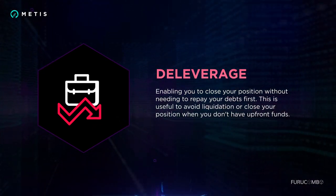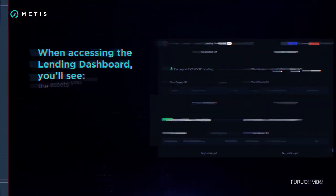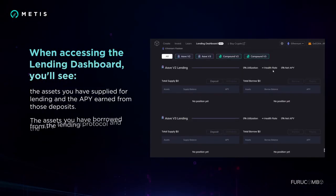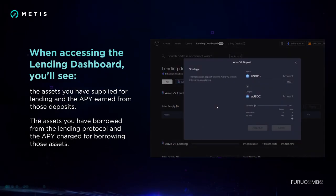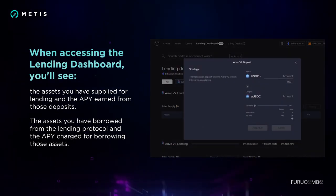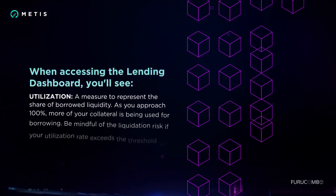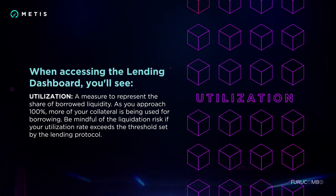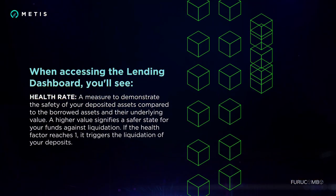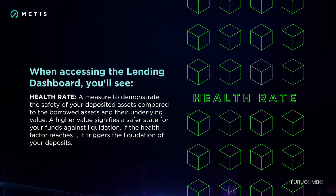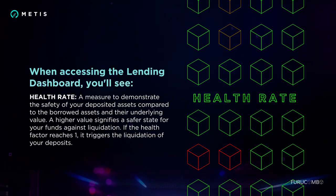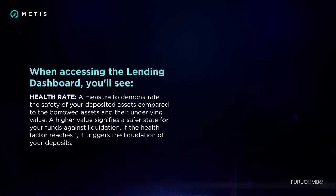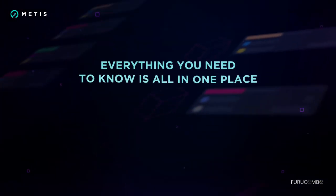D-Leverage enables you to close your position without needing to repay your debts first. This is useful to avoid liquidation or close your position when you don't have the upfront funds. When accessing the lending dashboard, you'll see the assets you've supplied for lending and the APY earned on most deposits, the assets you've borrowed and the APY charged for borrowing. Utilization is a measure of the share of borrowed liquidity — as you approach 100%, more of your collateral is being used for borrowing. Be mindful of liquidation risk if your utilization rate exceeds the threshold. Health Rate demonstrates the safety of your deposited assets compared to borrowed assets; a higher value signifies a safer state. If the health factor reaches one, it triggers the liquidation of your deposits. Everything you need to know is all in one place with the lending dashboard.